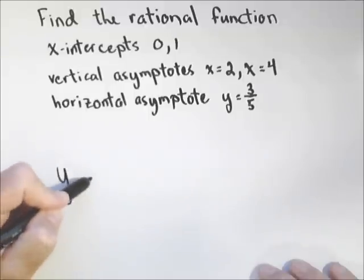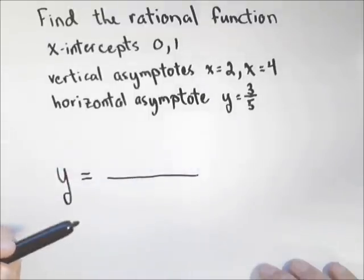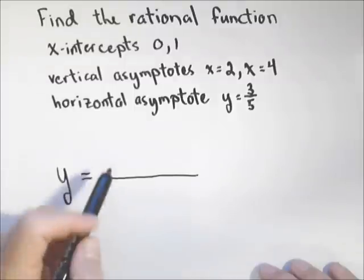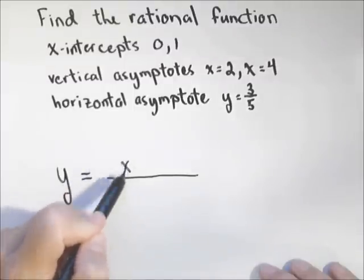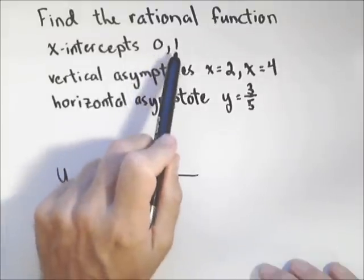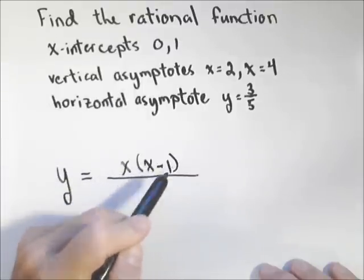We're going to use this information to build our rational function. First off, if we have an x-intercept at zero, that means x has to be a factor of the numerator. If we have an x-intercept at one, that means our other factor must be x minus one.